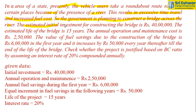So, the government is planning to construct a bridge across the river. The estimated initial investment for constructing the bridge is Rs. 40,00,000. The estimated life of the bridge is 15 years, and the annual operation and maintenance cost is Rs. 2,50,000.